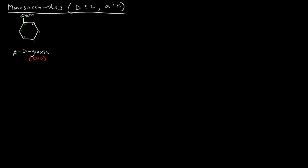In order, carbons two, three, and four — 'DUDS' here, where DUD stands for down, up, down. So the OH on the second carbon goes down, the OH on the third carbon goes up, and the OH on the fourth carbon goes down. That's how I remember that.